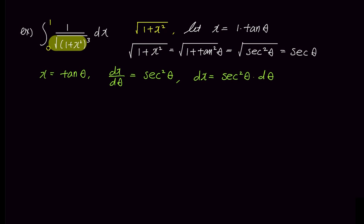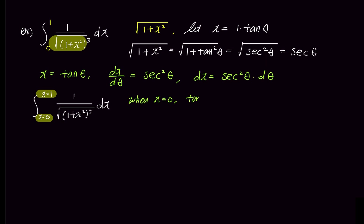Let's rewrite the problem. When dealing with definite integrals that require substitution, I prefer to express the integration limits using the variable — for example, writing the integral from x equals 0 to x equals 1. This helps remind us to transform the integration limits using the substituted function. When x equals 0, tangent theta is also 0, so theta is 0. When x equals 1, tangent theta becomes 1, so theta is pi over 4.